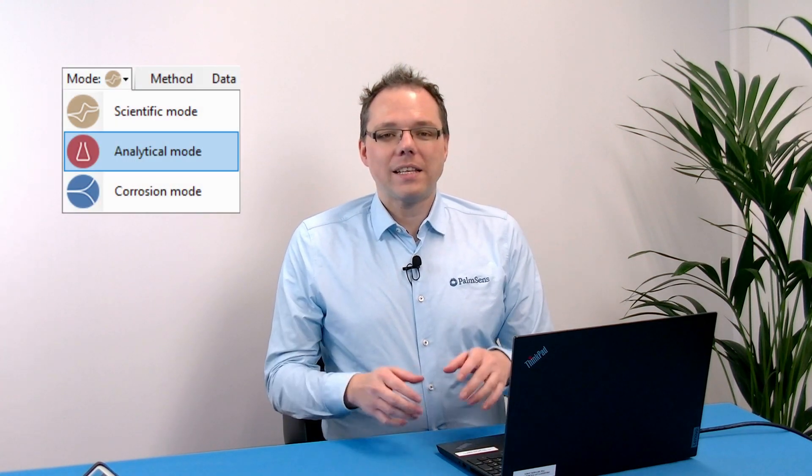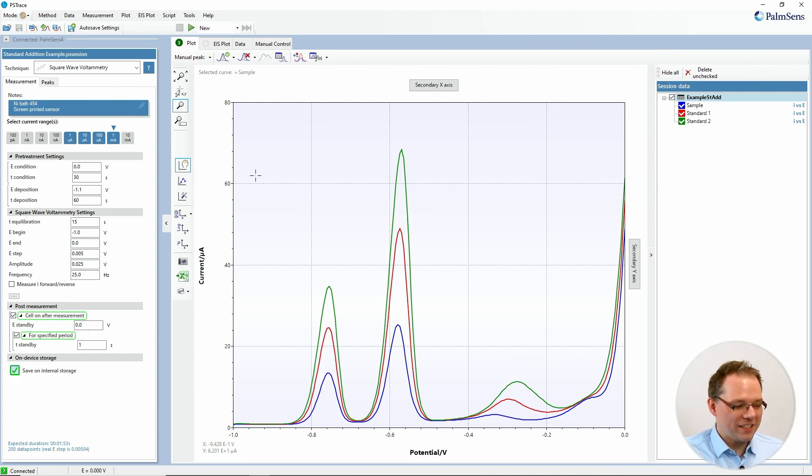Hello and welcome to this PSTrace tutorial video. Today I would like to talk about the analytical mode, which is a mode of PSTrace that allows you to calculate the results from a standard addition method or by using calibration curves in an automated way, so that you can easily get to your results without all these small calculations where you can easily make a mistake. Let's have a look at PSTrace to find out how to do this.